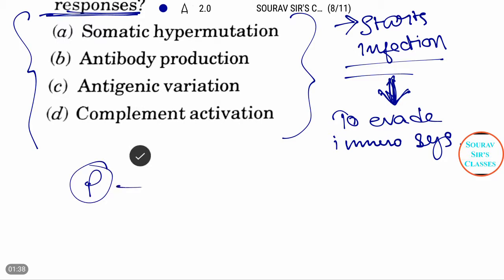A pathogen evades through it. So now the system is by altering its antigen or by altering its surface protein.